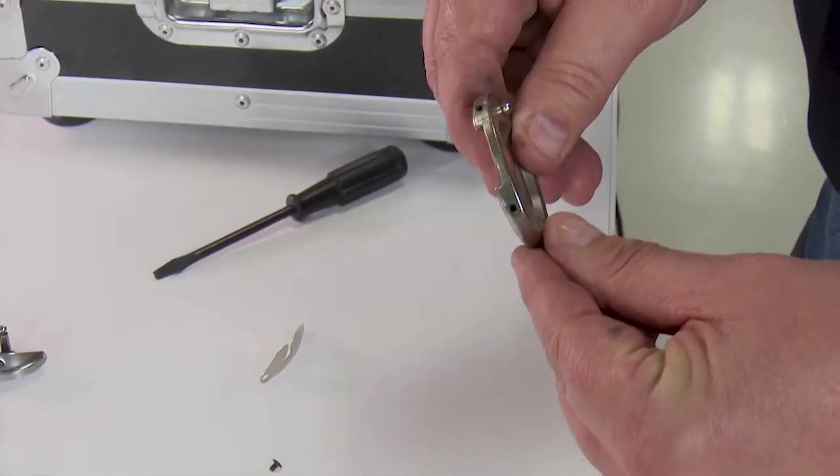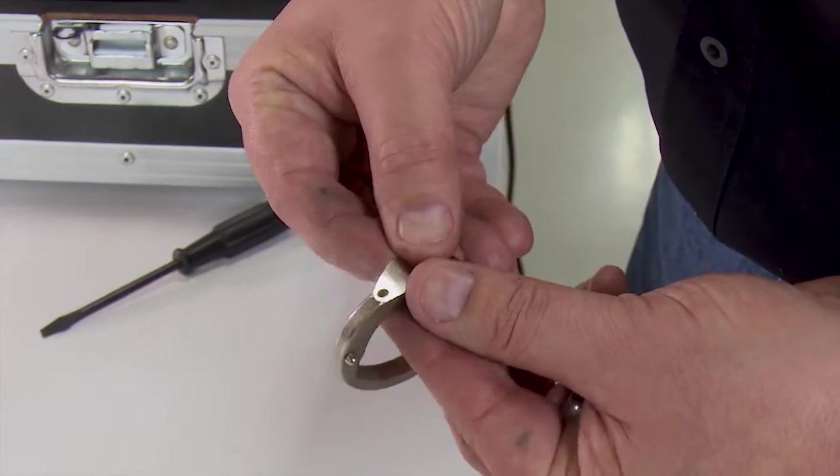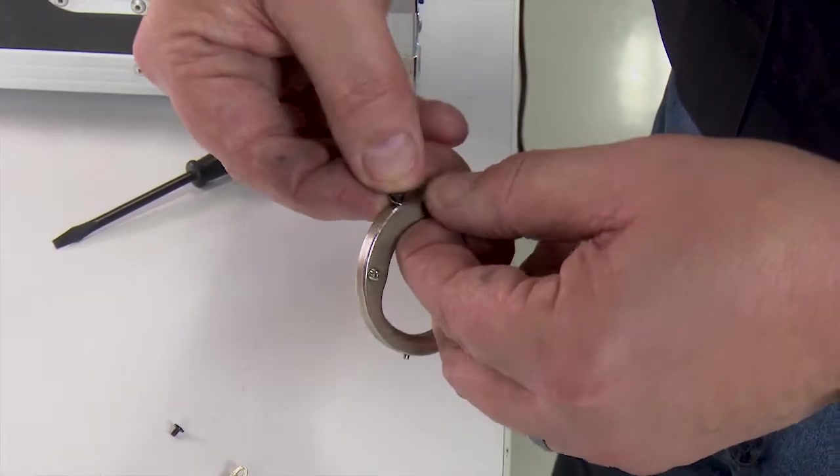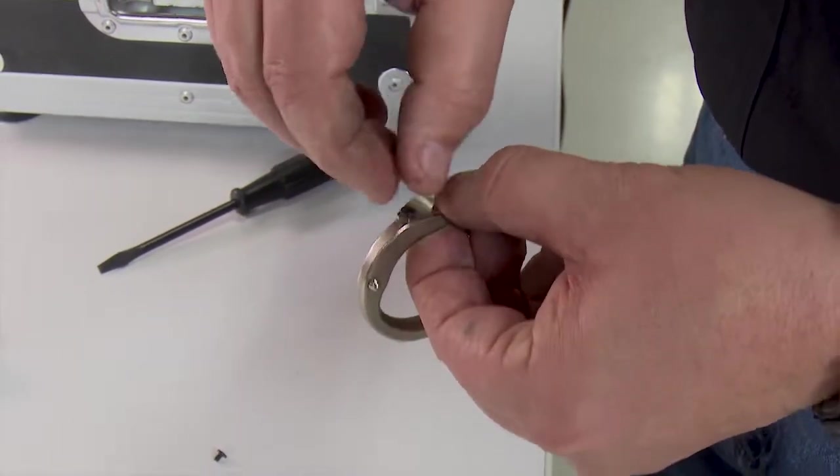Once removed we will replace the old with the new. We are showing this on the Ultrafeed LSZ1 sewing machine. The process is exactly the same on the LS1.